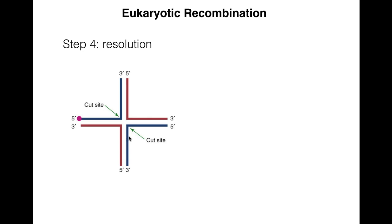There are many proteins found that do something similar to RUVC. For instance, one particular endonuclease selects two strands to cut based on the presence of a five-prime overhang near the actual junction.